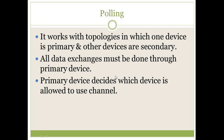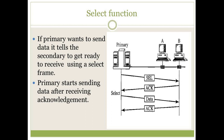The first controlled access protocol is polling. It works with topologies in which one device is primary and other devices are secondary. Polling will only work if there are two types of stations: one is considered as a primary station or server, and the other devices are client stations or secondary. All data exchanges will be done through the primary device, or the server, which has all the rights to exchange data. The primary device decides which device is allowed to use the channel and which device will send or receive messages.